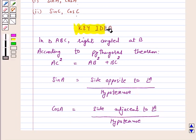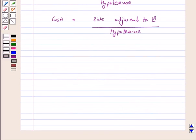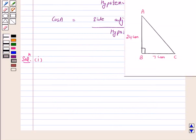Let's use this key idea to solve the above question. Solution, Part 1. Let ABC be the given triangle, right angle at B. It is given AB is equal to 24 cm and BC is equal to 7 cm.